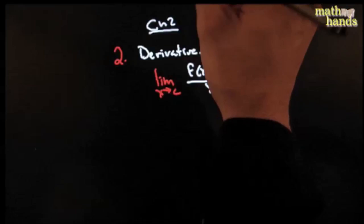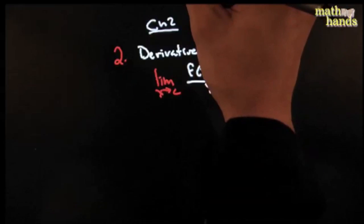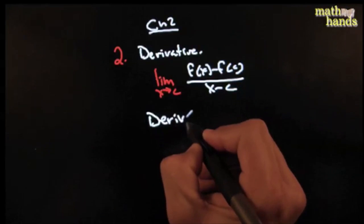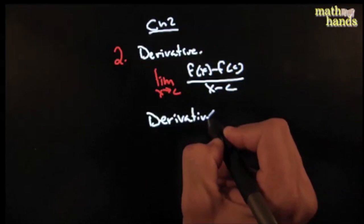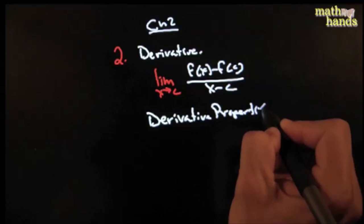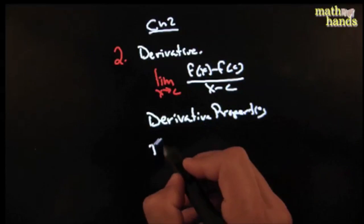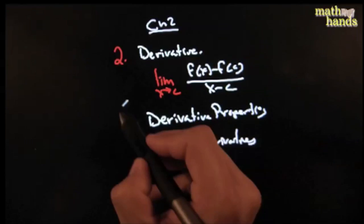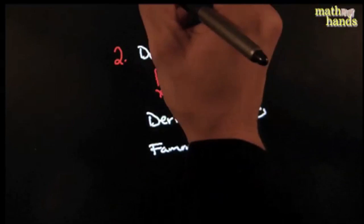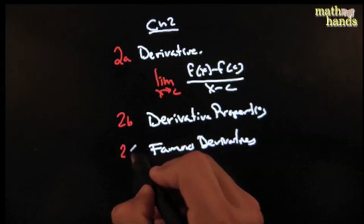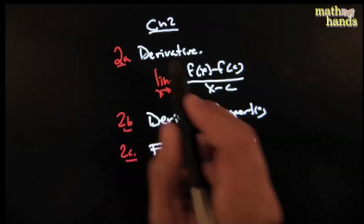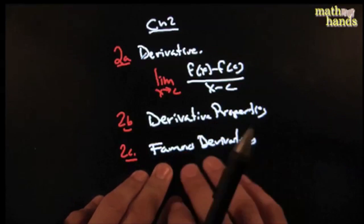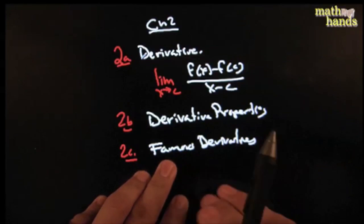The other super important highlight of Chapter 2 was derivative properties and famous derivatives — things like the product rule and quotient rule. By Chapter 2, you have to be super good at finding derivatives. You should be able to handle anything thrown at you — the derivative of sine is cosine, and so on.